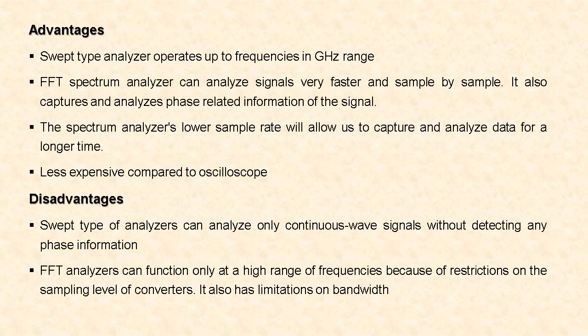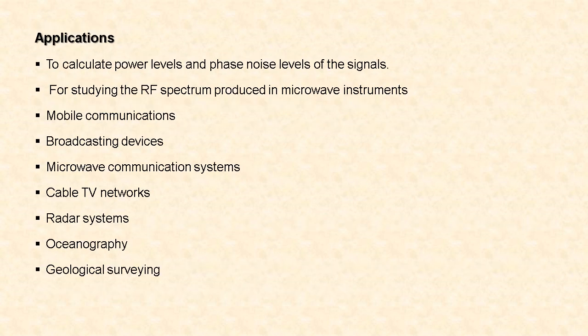The disadvantages of spectrum analyzers: swept-type analyzers can analyze only continuous wave signals without detecting any phase information. FFT analyzers can function only at a limited range of frequencies because of restrictions on the sampling level of converters, and they also have limitations on bandwidth. Applications: spectrum analyzers are mainly used to calculate power levels and phase noise levels of signals, for studying the RF spectrum produced in microwave instruments, and in mobile communications, broadcasting, microwave communication systems, cable TV networks, radar systems, oceanography, and geological surveying.